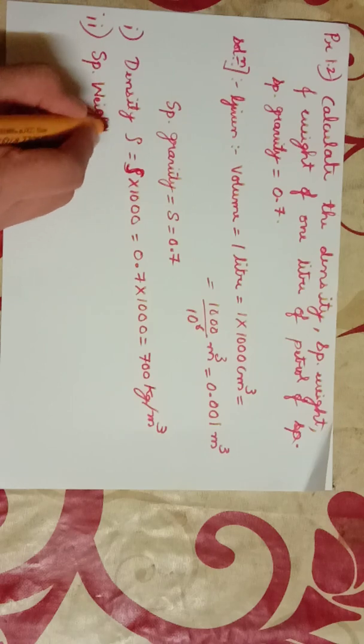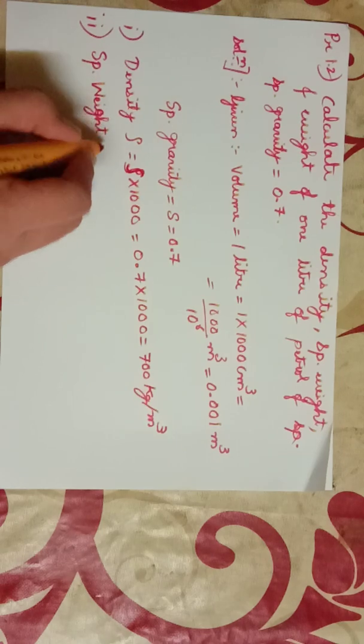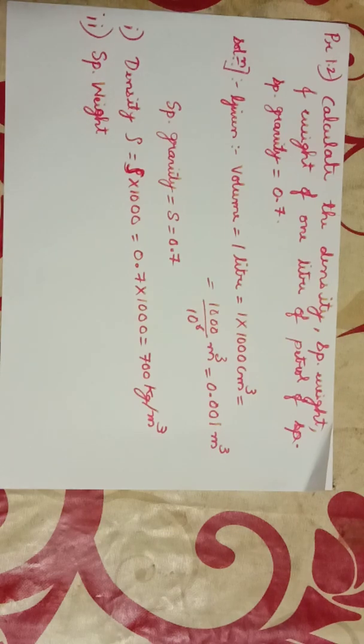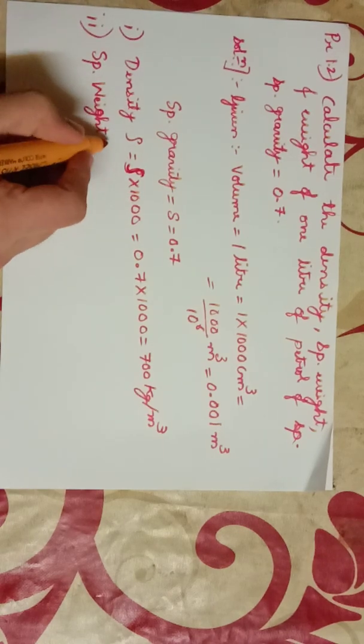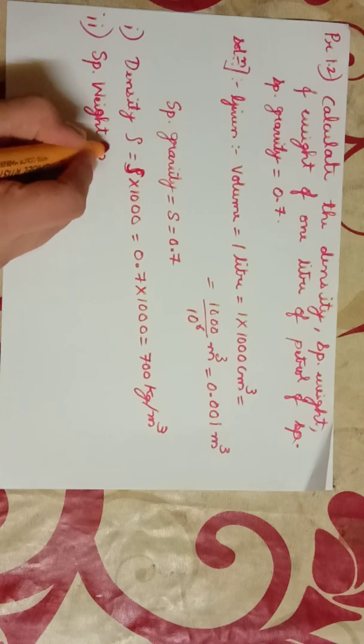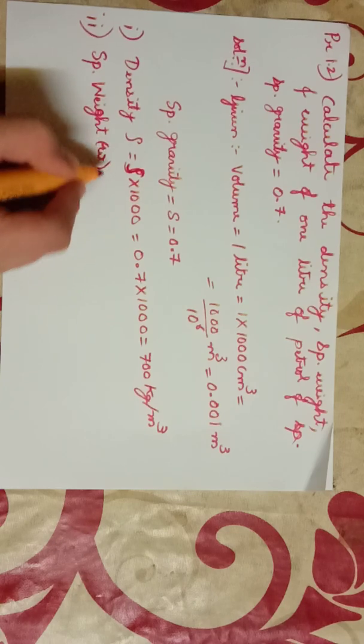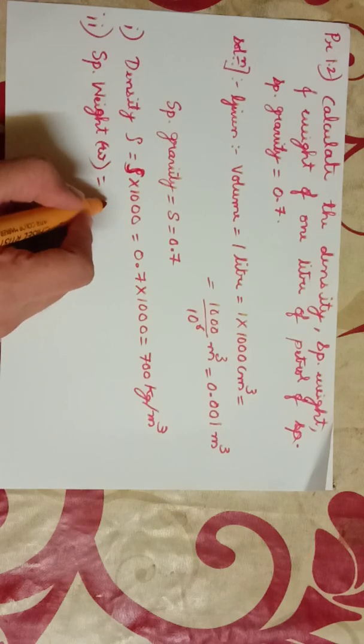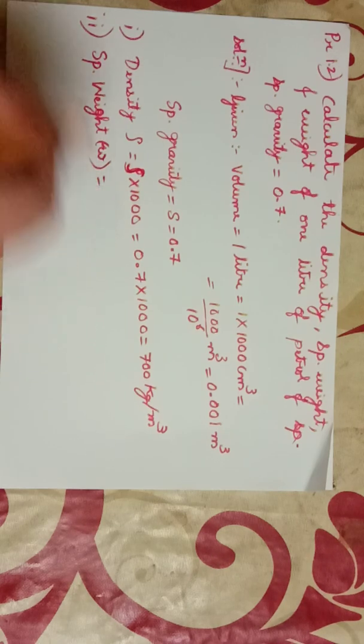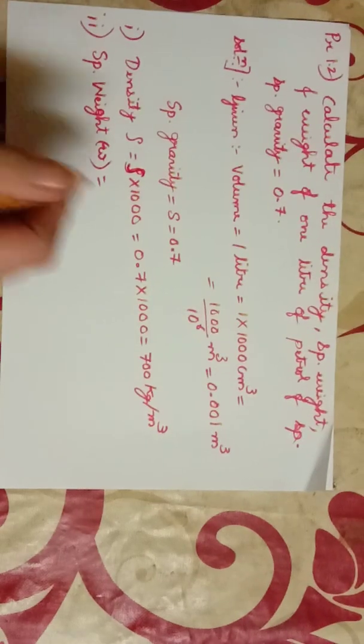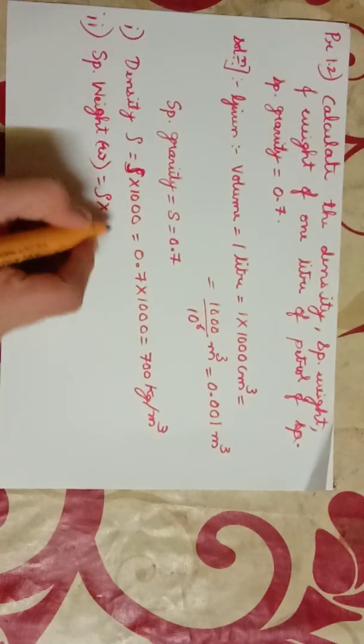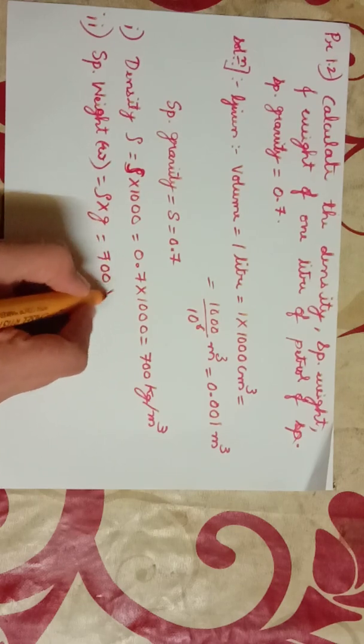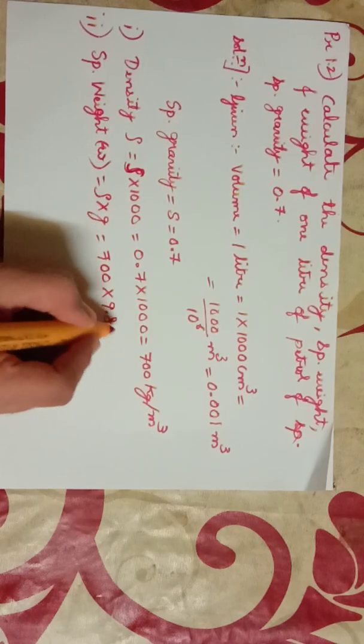Specific weight, w, that is equal to rho times g, that is 700 times 9.81.